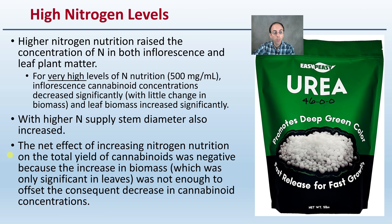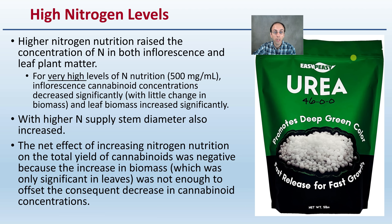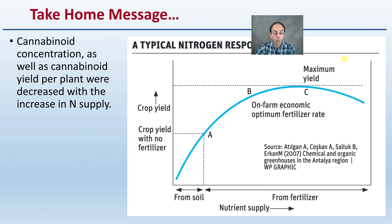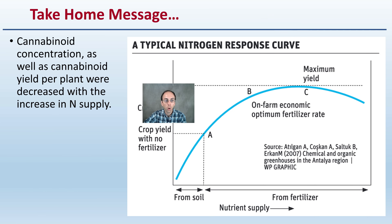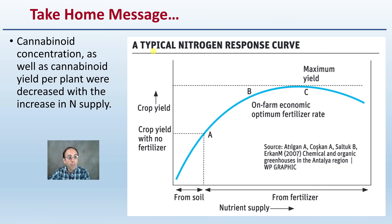The net effect of increasing nitrogen nutrition on total cannabinoid yield was negative because the increase in biomass was only significant in the leaves — that extra giant leaf growth — and this was not enough to offset the constant decrease in cannabinoid concentrations. Getting a bigger plant at excessive nitrogen levels means decreasing total yields, which should not be the goal. Cannabinoid concentration and yield per plant both decreased with increased nitrogen supply.